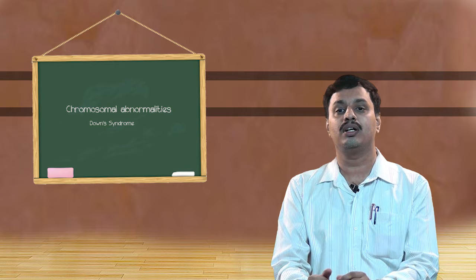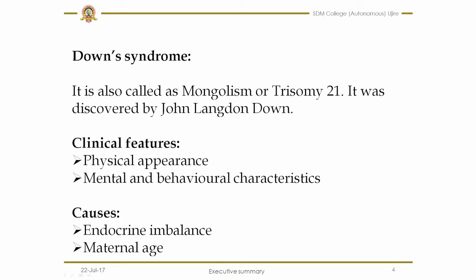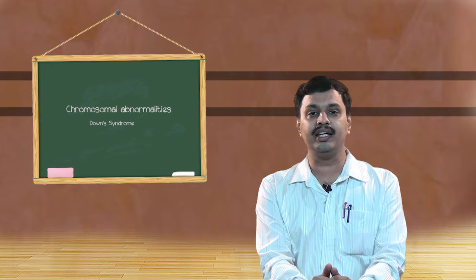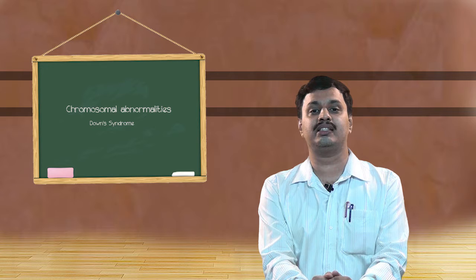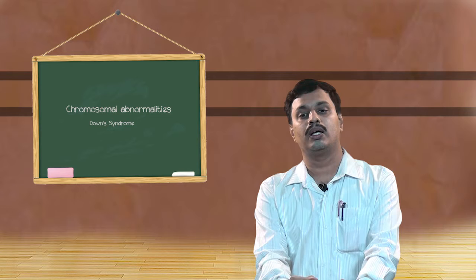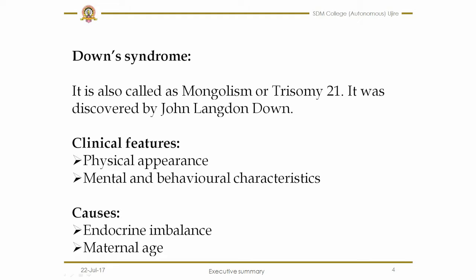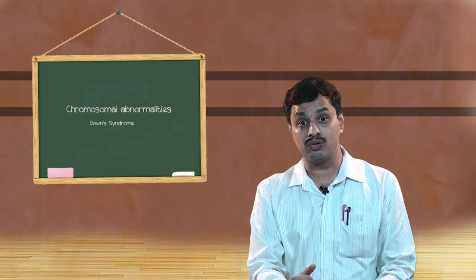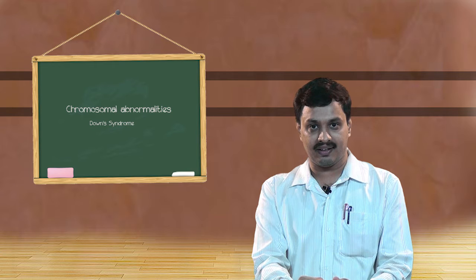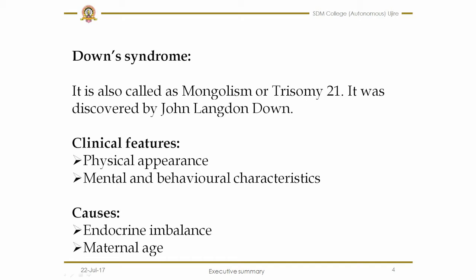Going to the causes of Down syndrome — the first one is endocrine imbalance, that is the imbalance in any glands that occurs during pregnancy, which may result in Down syndrome. For example, imbalance in the pituitary gland or the thyroid gland may result in Down syndrome. Another cause, as researchers say, is maternal age. If the lady conceives between the ages of 35 to 40, then the chances of developing Down syndrome are more prevalent compared to ages below 35. That is why the conducive age for having a baby is below 35 years according to researchers.